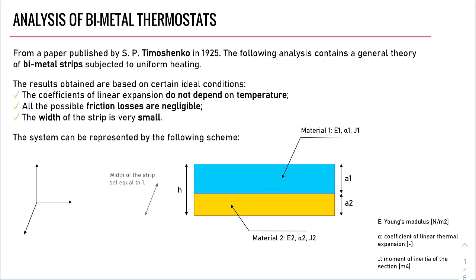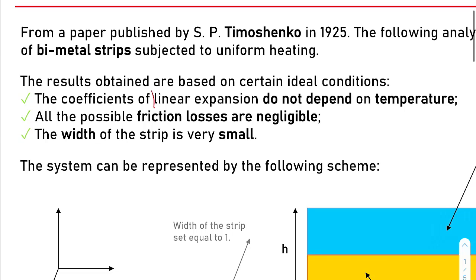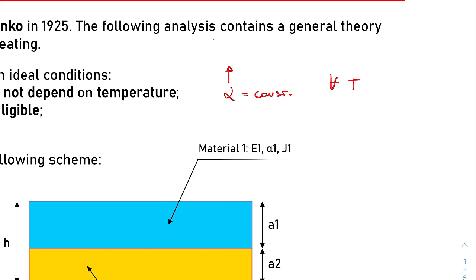Timoshenko made three preliminary hypotheses. The first one states that the coefficients of linear thermal expansion do not depend on temperature. This, from a mathematical point of view, means that alpha is constant whatever the value of the temperature. Alpha is a Greek letter and is commonly used to identify this physical quantity, the linear thermal expansion. This alpha coefficient is generally measured in Kelvin to the power of minus 1.